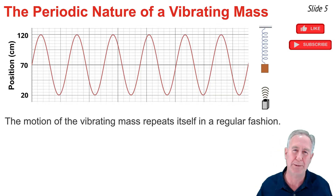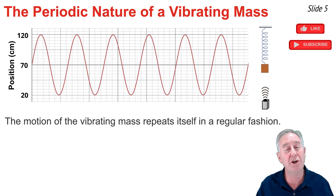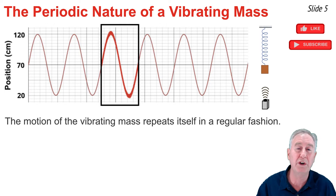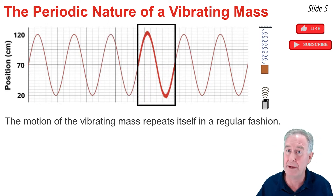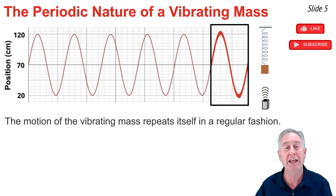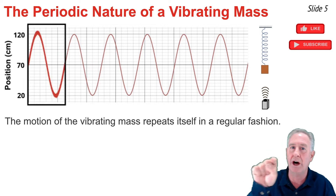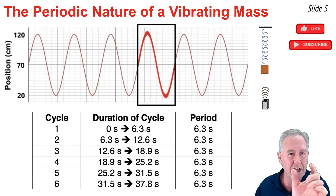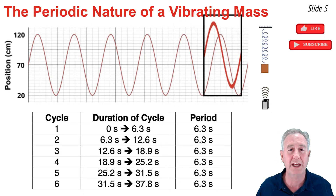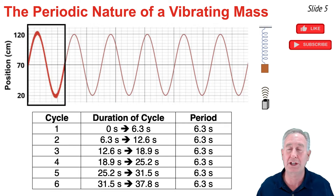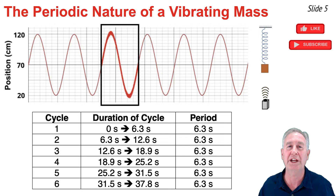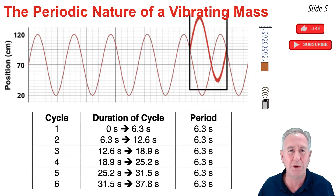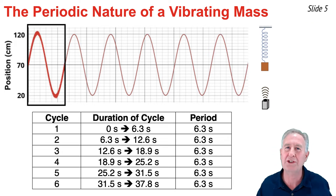Is it a regular repetition — does it always take the same amount of time? To test, I could take that section of the graph, pull it out, move it over cycle after cycle, to see if it matches up. And what we notice is that it does match up. If one unit along the time axis equals a second, the first cycle goes from zero to 6.3 seconds, the second from 6.3 to 12.6 seconds, the third from 12.6 to 18.9 seconds. The period is always 6.3 seconds — constant, consistent with periodic motion.